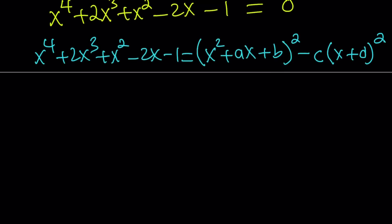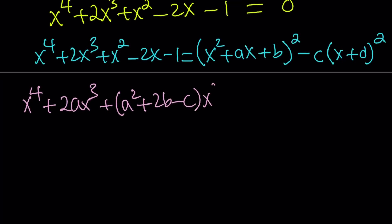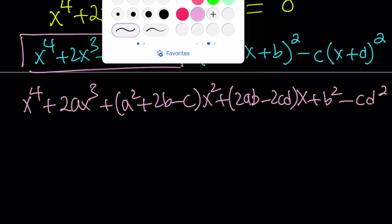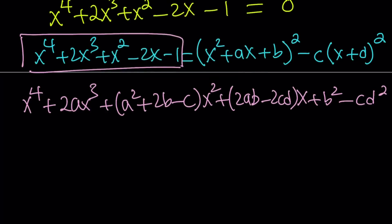We can distribute this — I'm going to skip the details and give you what we get from the right-hand side. The right-hand side gives you x to the 4th plus 2a·x cubed plus (a squared plus 2b minus c)·x squared plus (2ab minus 2cd)·x plus b squared minus c·d squared. This is equal to our original quartic. Comparing coefficients: x to the 4th matches up; the coefficient of x cubed is 2a equals 2, which means a equals 1.